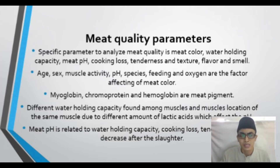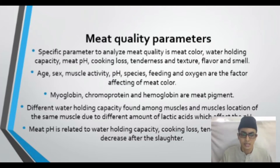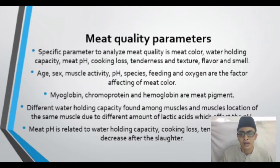There are several specific parameters to analyze the quality of meat, which include the color of the meat, the water holding capacity, the pH of the meat, the cooking loss, tenderness, texture, flavor, and the smell of the meat. Age, sex, muscle activity, pH, species, feeding, and oxygen are the factors affecting the color of the meat.